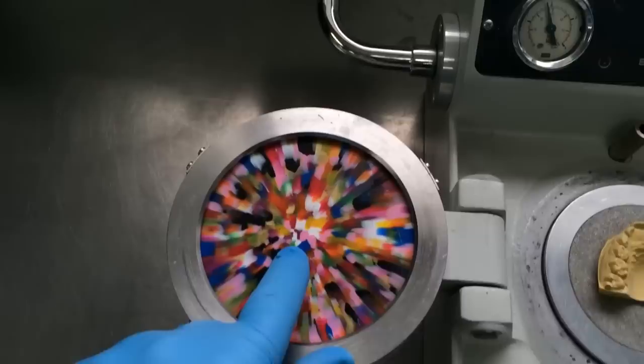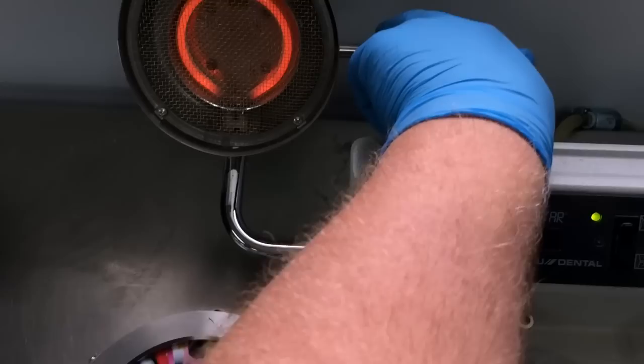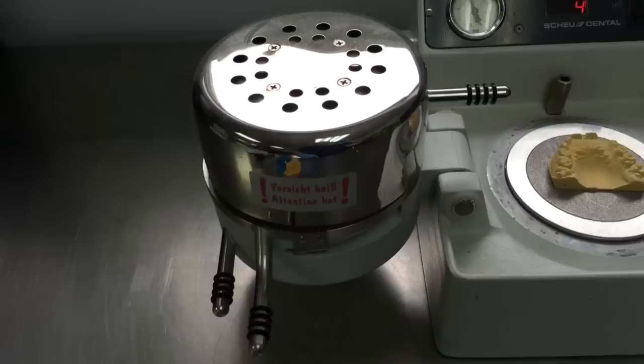Now up here what there is, is there's this big heater. So what we're going to do is we're going to flip that over right now and that is going to start to heat up the mouth guard blank. It's going to start to basically melt it.